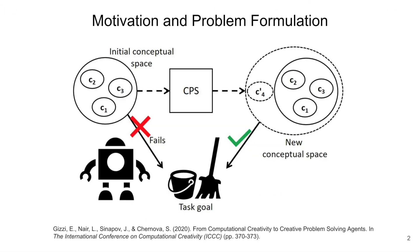How can an agent discover new actions when the original actions it knows are not enough to solve a task? This may happen when novelty is introduced in the environment, the original model of the environment is not accurate, or the agent faces a novel task. Creative problem solving allows an agent to discover new actions to accomplish a previously unreachable goal.